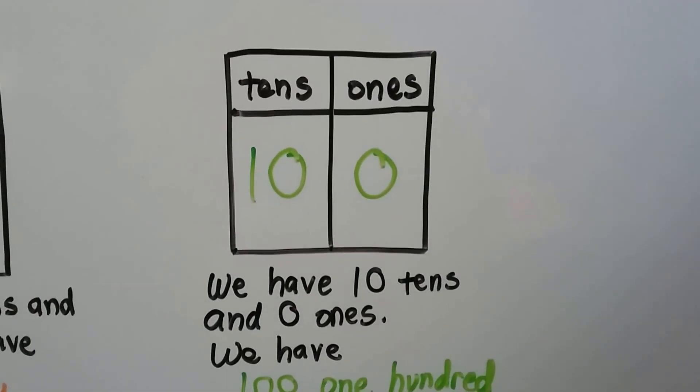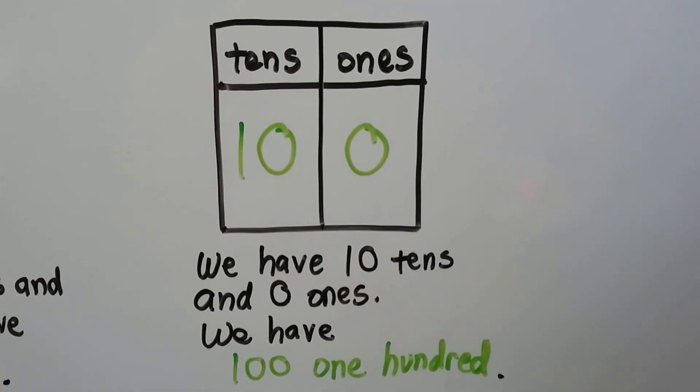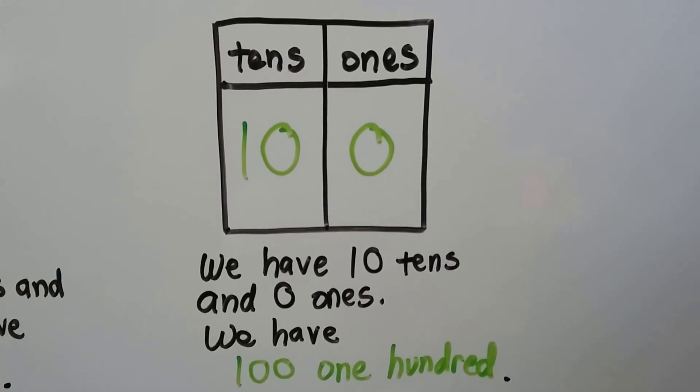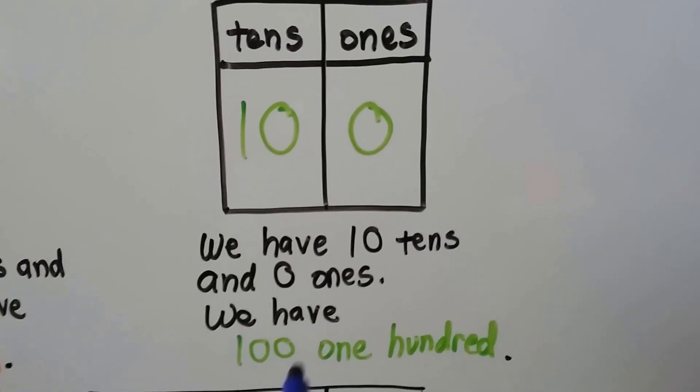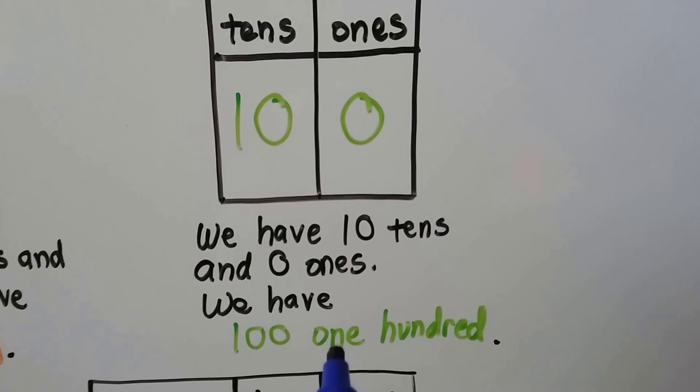Now here's the tricky one. If we have ten tens and zero ones, we have one hundred. One hundred.